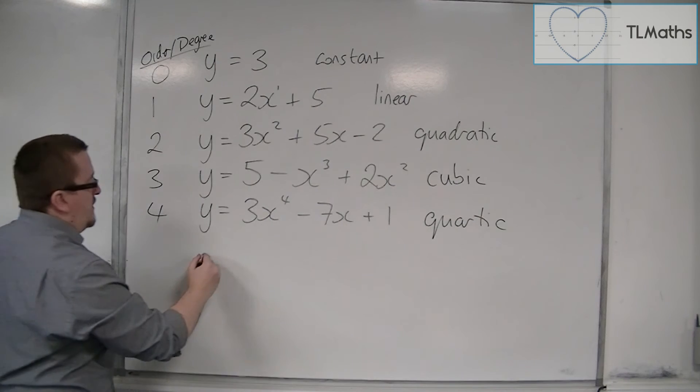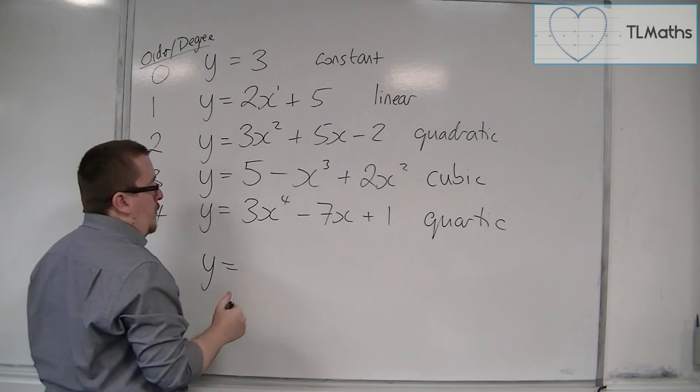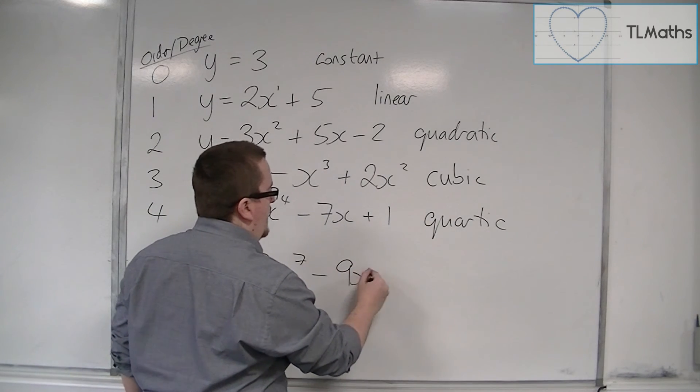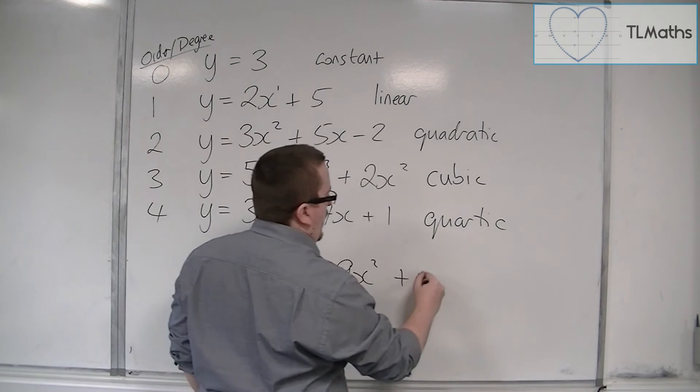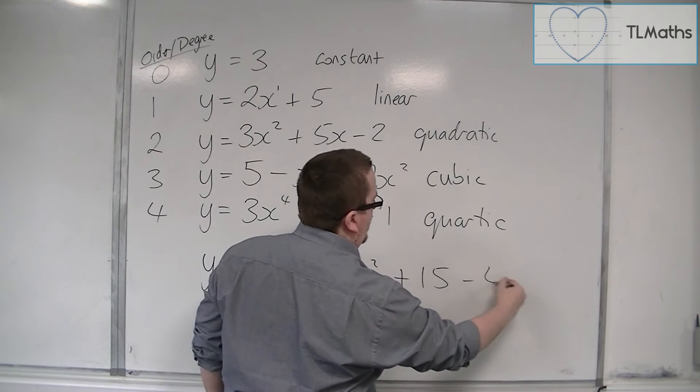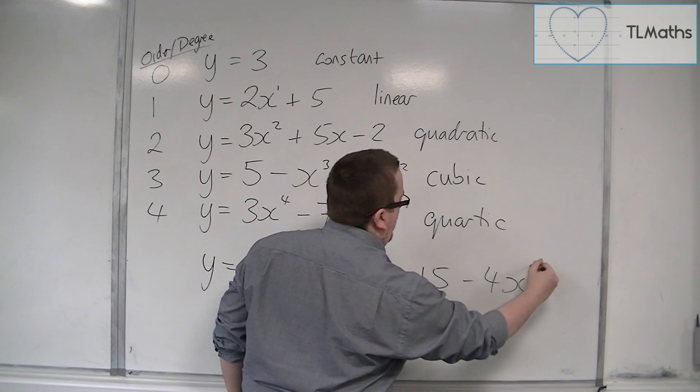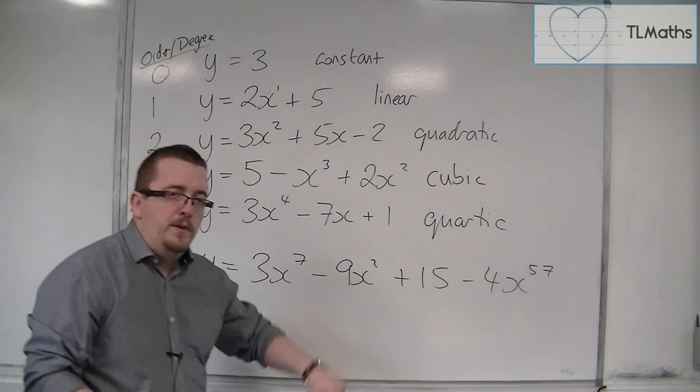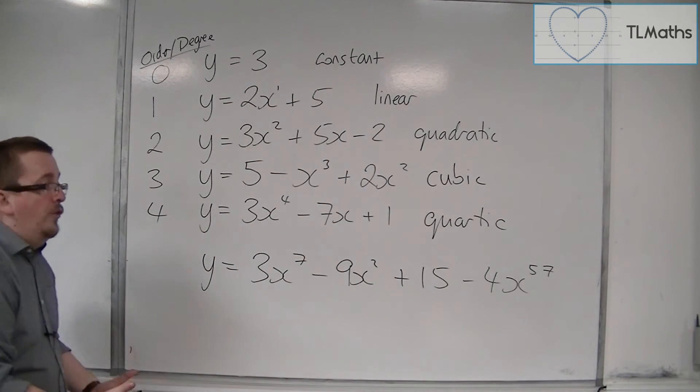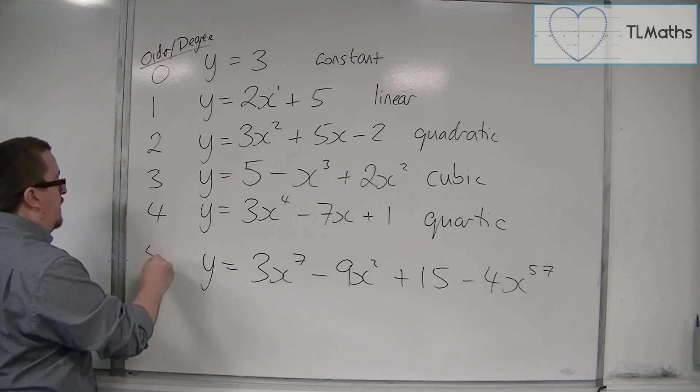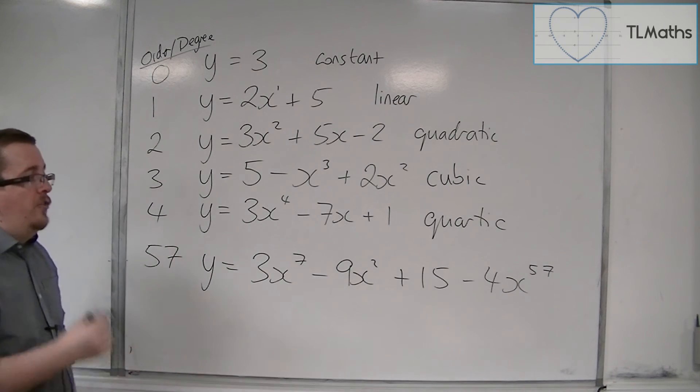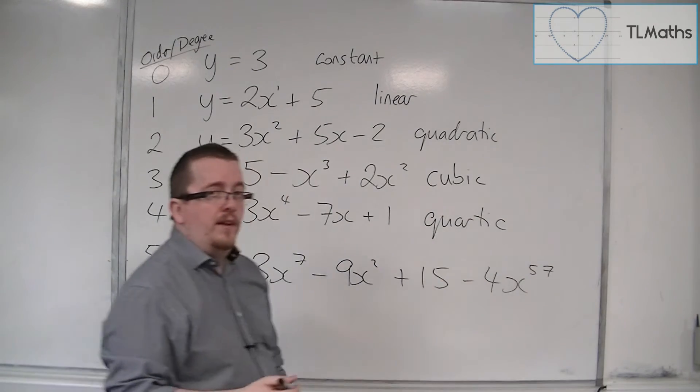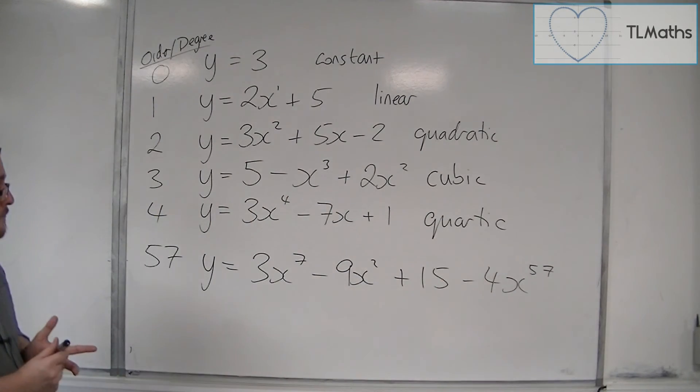So if I wrote down an equation that looked like this, y is equal to 3x to the 7 minus 9x squared plus 15 take away 4x to the 57, for example. Here is a polynomial that is of order 57, or degree 57, because you're always looking for the largest power of x in this case.